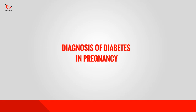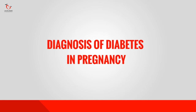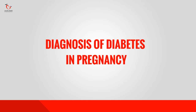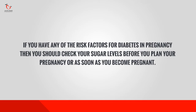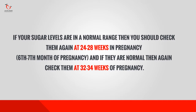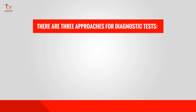Now let's discuss about diagnosis of diabetes in pregnancy. If you have any of the risk factors, you should check your sugar levels before you plan your pregnancy or as soon as you become pregnant. If sugar levels are normal, check them again at 24 to 28 weeks of pregnancy — that is 6 to 7 months — and if normal at that time, check again at 32 to 34 weeks. There are 3 different approaches for the diagnostic test.